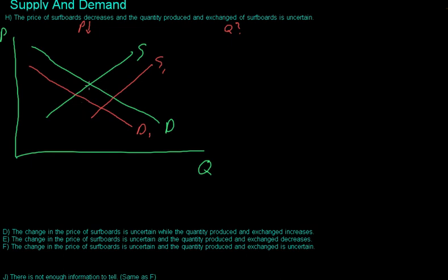And so as you can see, that drops, sorry, I didn't draw this initial equilibrium in. So that drops the equilibrium from like right here at Q1 and P1 to over here at Q2 and P2.